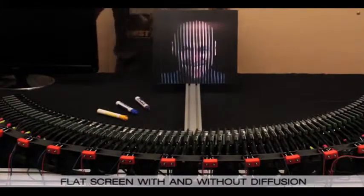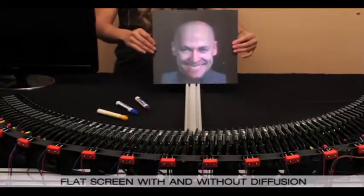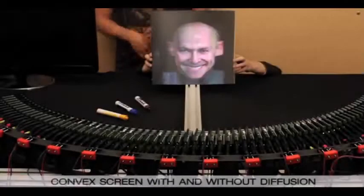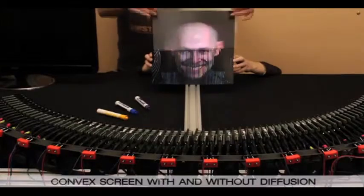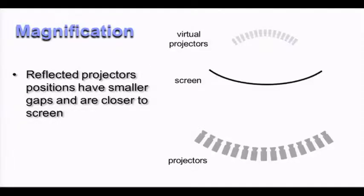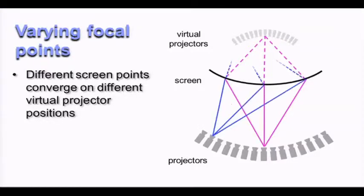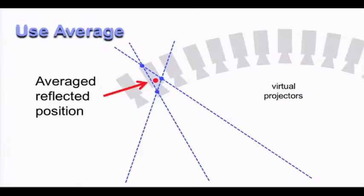So another thing we explore in the paper is different mirror shapes. So I mentioned earlier that using a flat screen, you use a holographic diffuser to fill in the gaps. Now if you actually curve the shape of the screen using a convex mirror, you can actually decrease the spacing between the stripes. And what's happening here is that you're actually magnifying the position of the projectors so that they are closer to the screen and have smaller gaps behind the screen. And so this only really works for a front projection case.